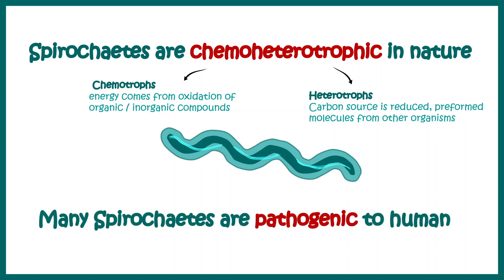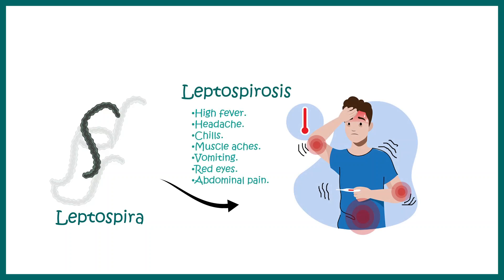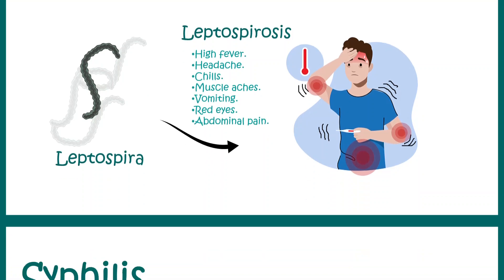Many spirochetes are pathogenic to humans, such as Leptospira, which causes leptospirosis, characterized by high fever, headache, chills, abdominal pain, vomiting, etc.